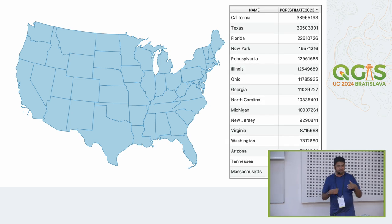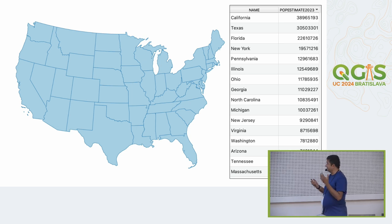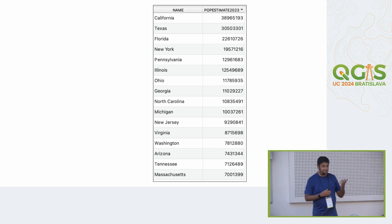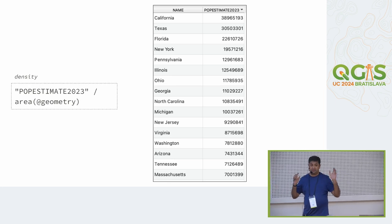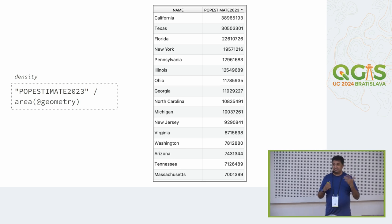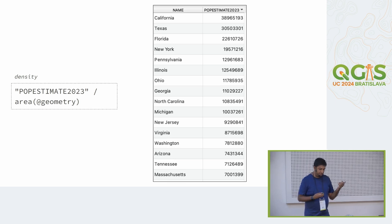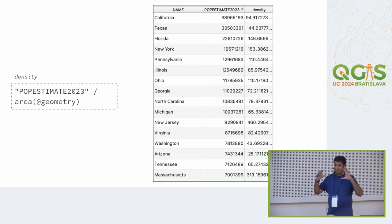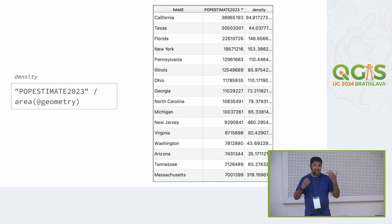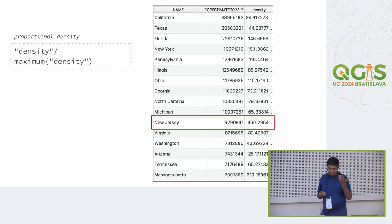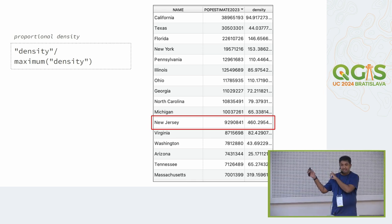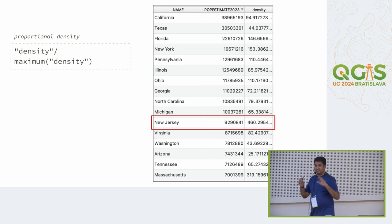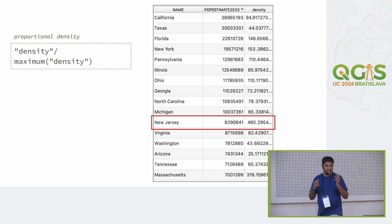We start with a polygon layer with an attribute called 'pop_estimate_2023'. The first step is to compute density — divide pop_estimate_2023 by area(@geometry). This gives the density for each feature. Then we want to scale each feature relative to the highest density — New Jersey is the highest. So we write an expression: the current feature's density divided by the maximum of that column, giving us the relative density.